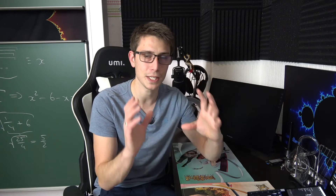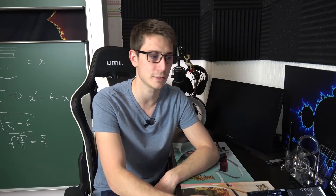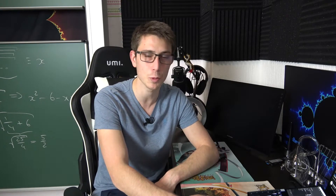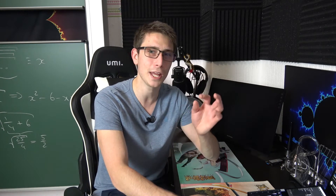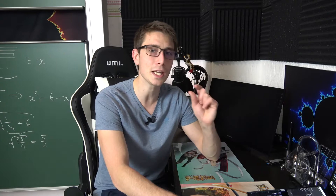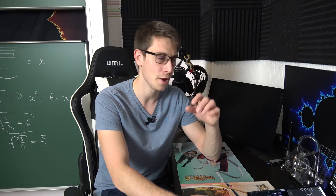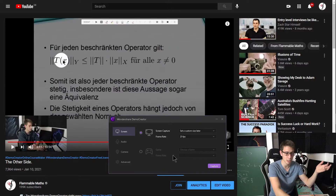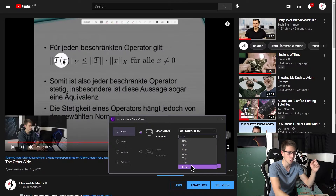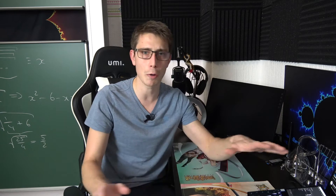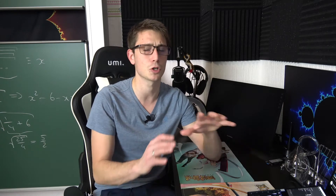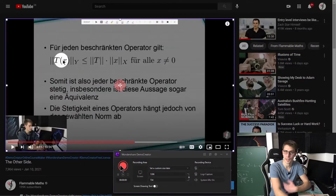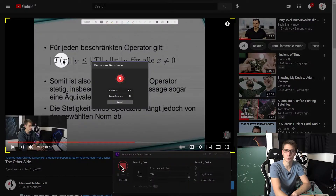One other very important thing we need to set up in our screen settings is the frames per second. We don't want a laggy video — we want clear, smooth video quality with no lags, no frame rate issues, nothing. For this, you are going to switch, for example, from 25 fps to 120 fps. No limits — it's going to work out very smoothly. Now after setting everything up, I invite you to click on the record button.